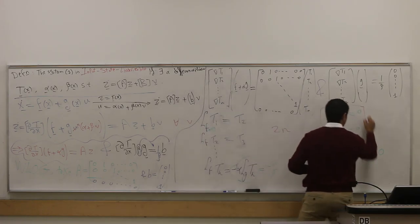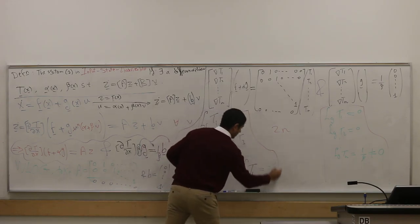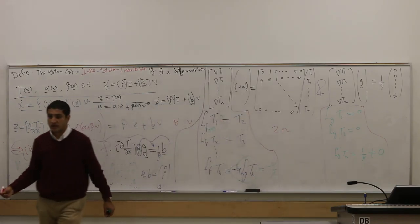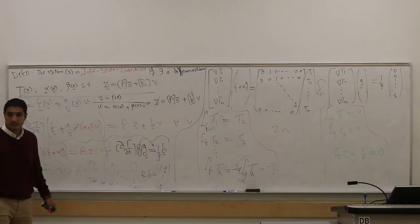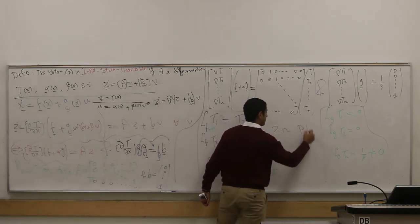These equations, these are 2n, right? What type of equations are these? These are partial differential equations. I have 2n PDEs.